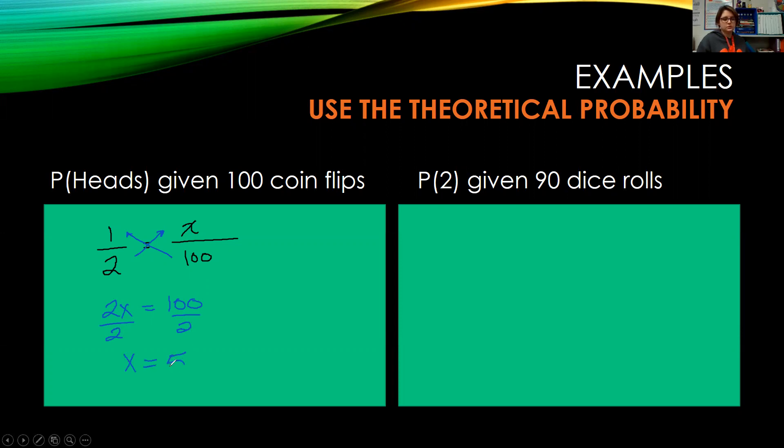And so x equals 50. So we would expect heads to land face up 50 times if we were to flip a coin 100 times.